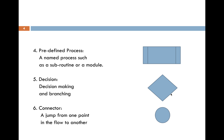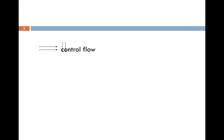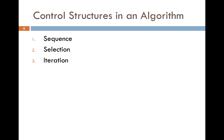Symbol six is the connector — it allows you to jump from one point in the flowchart to another when the flowchart is large. There are also various arrows to control flow. Control structures in an algorithm include sequence, selection, and iteration. Sequence is a set of instructions one after the other; selection is decision making; and iteration is repeating a task until a condition is met.